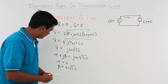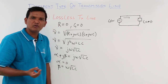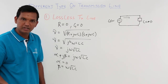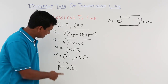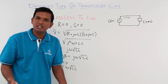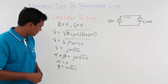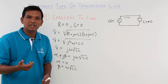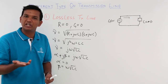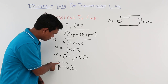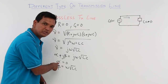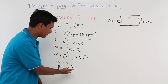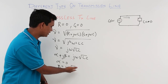Alpha is the attenuation constant and beta is the phase constant. Alpha equals zero, which makes sense — when we say the medium is lossless, none of the voltage or signal should be attenuated. That is confirmed here. And there has to be a phase constant, which comes out to be ω√(LC).